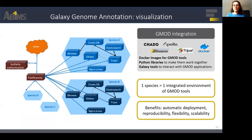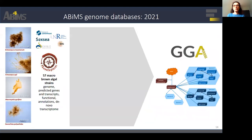On the Rennes platform, we set up the GMOD visualization tools infrastructure to deploy, for each algal species, an integrated environment with Chado, JBrowse, and TriPLEx. This system brings important gains in speed and reproducibility of deployment. For the FAIRE Explorer project, we have 57 genomes with the genome assembly, predicted genes and transcripts, functional annotations, and de novo transcripts, that we want to integrate into GGA environments.